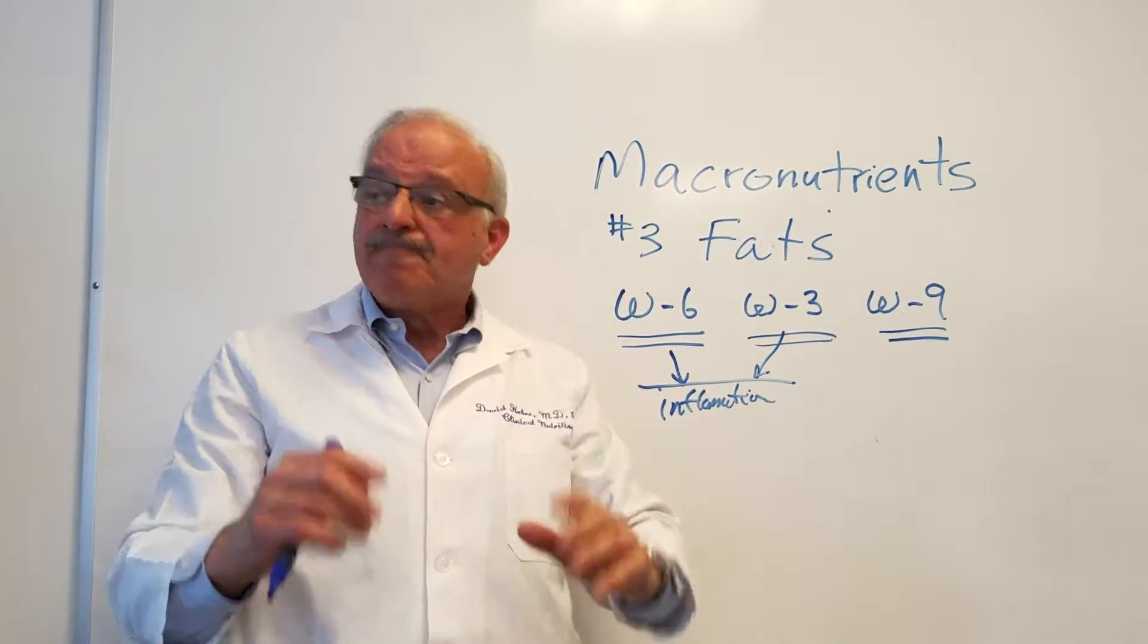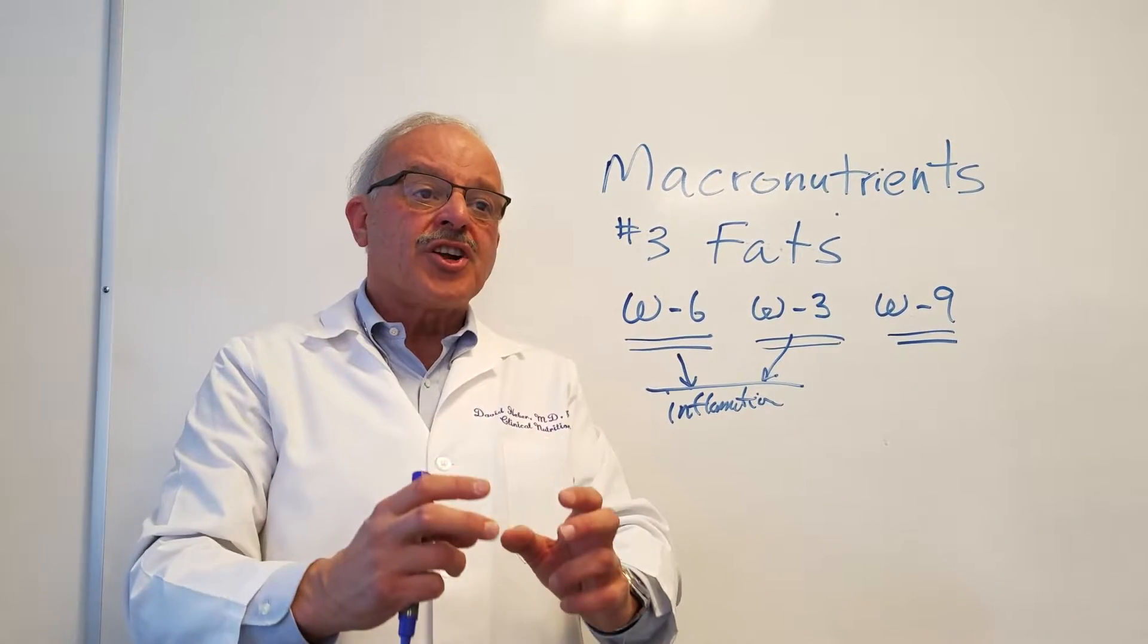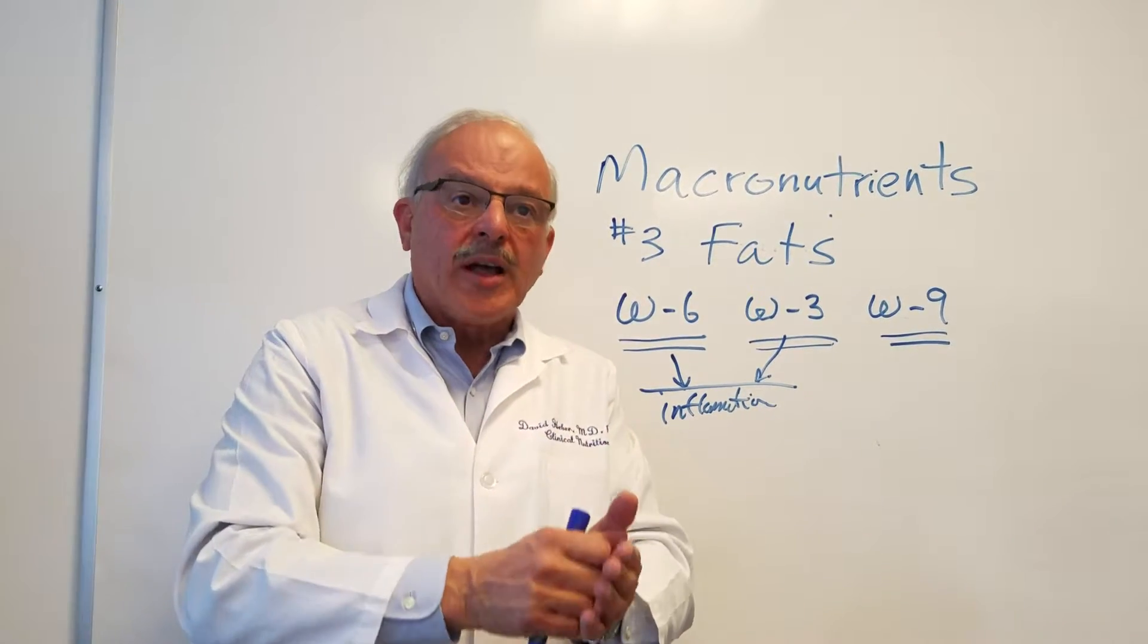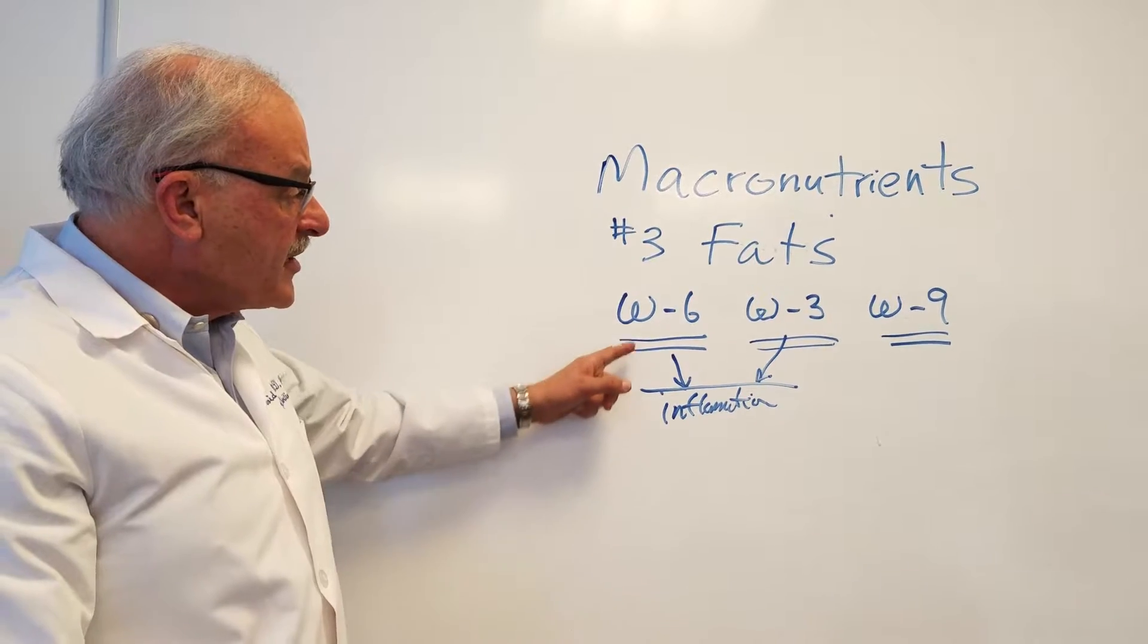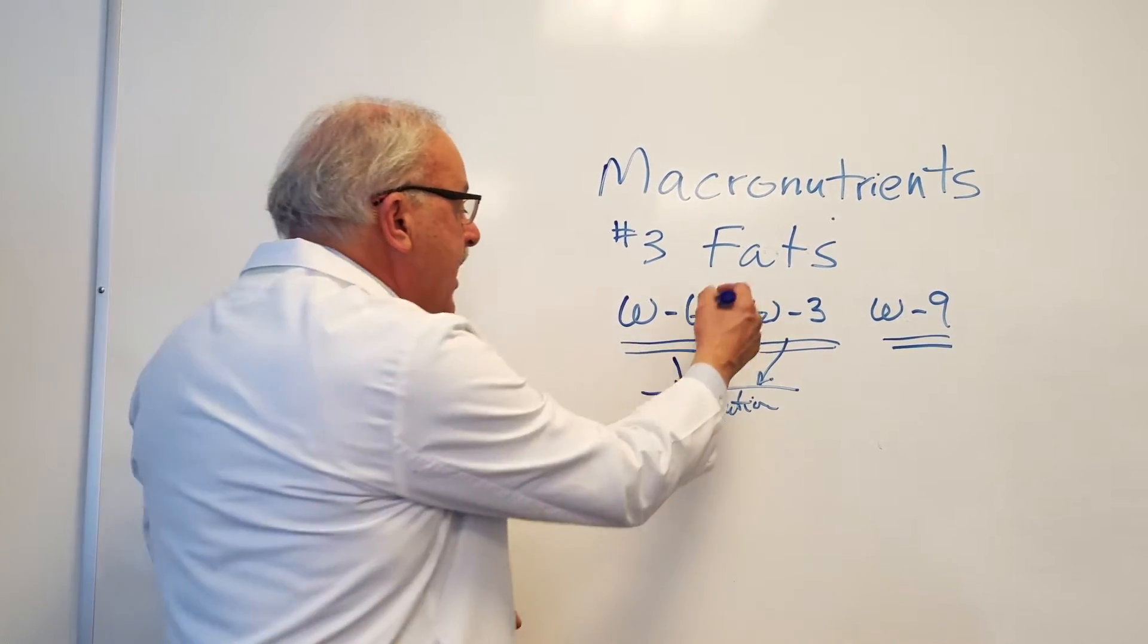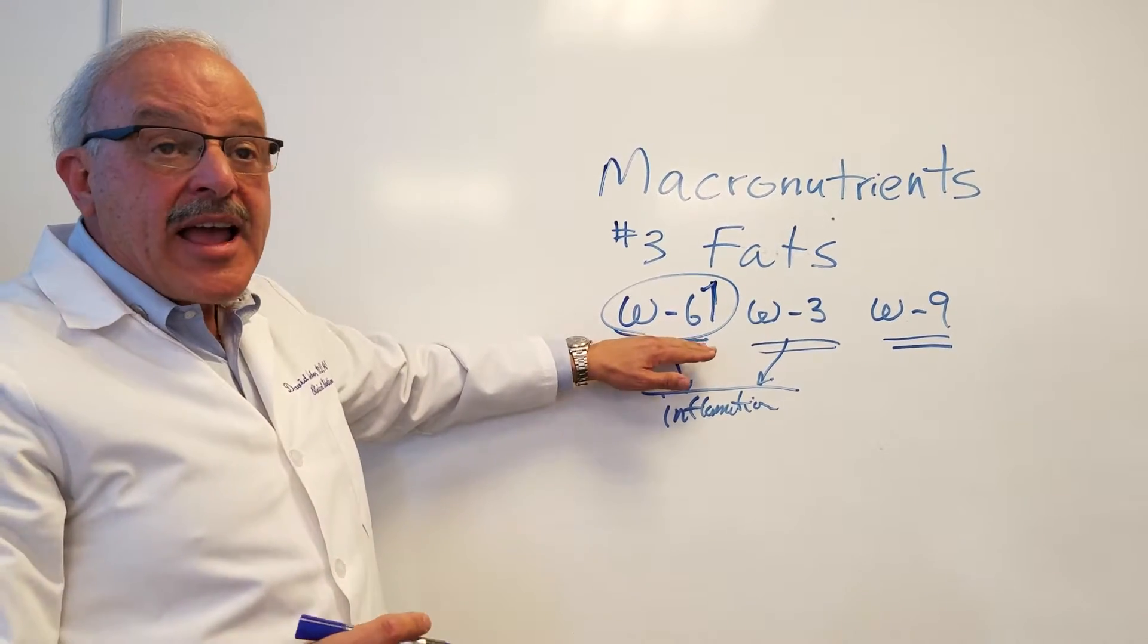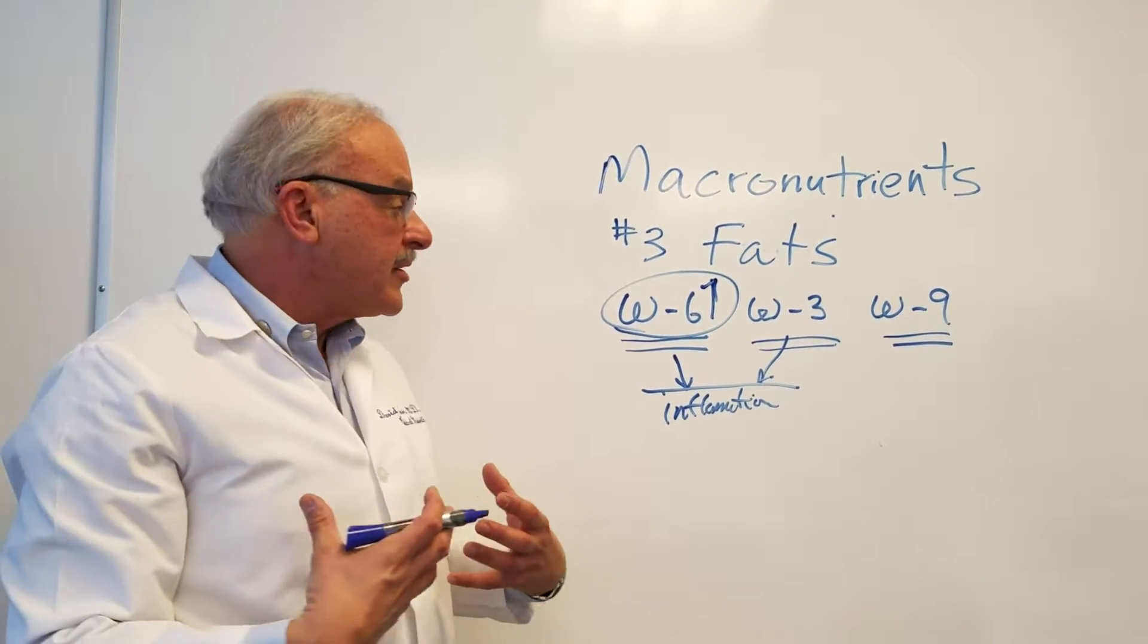And then what happened is in the 20th century, people started crushing seeds like soy seeds and corn seeds to make oil. And they made a ton of oil. What happened was the intake of omega-6 fats went way, way up to the point that this became much more dominant and inflammatory in our tissues. And it got incorporated into all the membranes in our body.